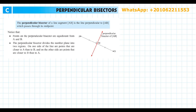The perpendicular bisector of a line segment AB is perpendicular to AB and bisects AB at its midpoint. We have a line segment AB and a perpendicular line passing through AB at the midpoint.